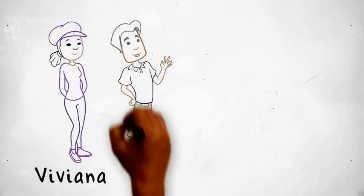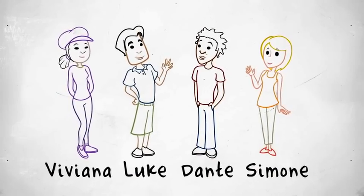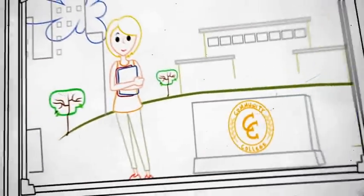So the different choices that Viviana, Luke, Dante, and Simone make can help the rest of us draw conclusions that benefit everyone, all by referring to just one resource, the VLDS.